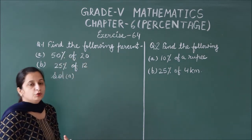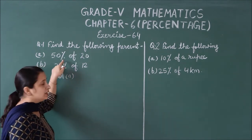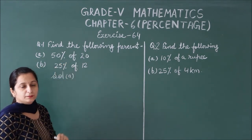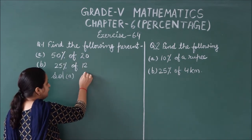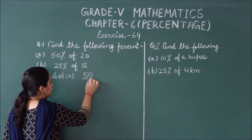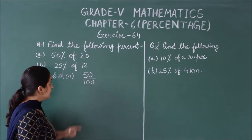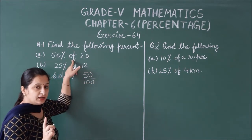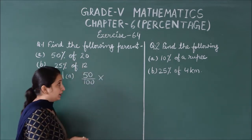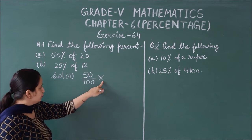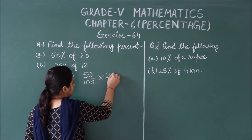We need to solve this part. In the previous class, we told you that we need to remove the percent sign — we use 100. So if we remove the percent, we put it over 100. Next, the word 'of' means multiply in mathematics. So 'of' means multiply, then we use 20.